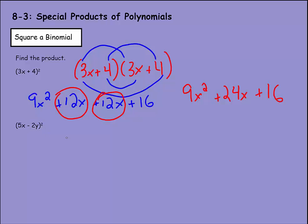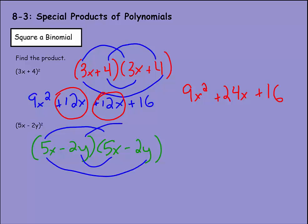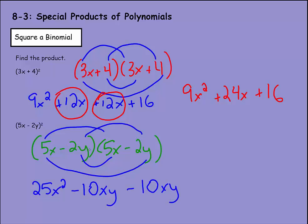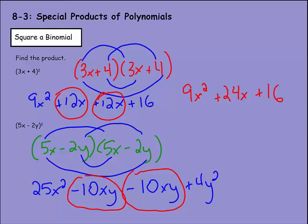Now let's do (5x − 2y) squared, written as (5x − 2y) times (5x − 2y). Using FOIL: front is 5x times 5x = 25x squared; outside is 5x times −2y = −10xy; inside is −2y times 5x = −10xy; last is −2y times −2y = +4y squared. Combining −10xy and −10xy gives −20xy, so the answer is 25x squared minus 20xy plus 4y squared.